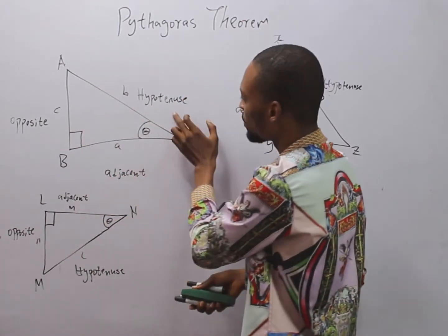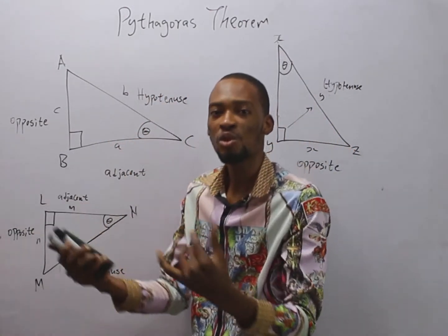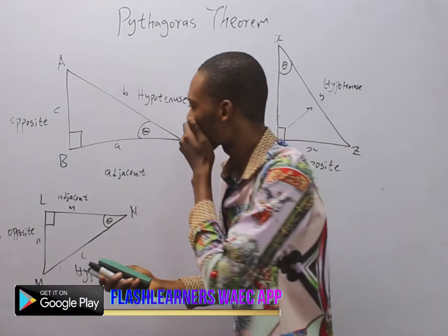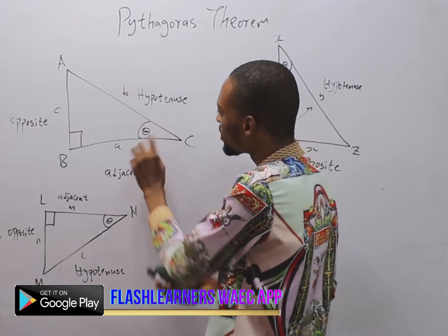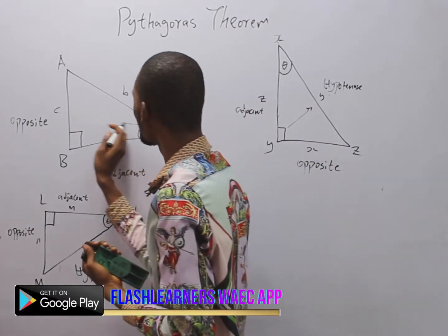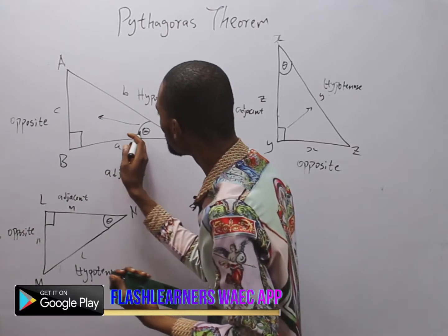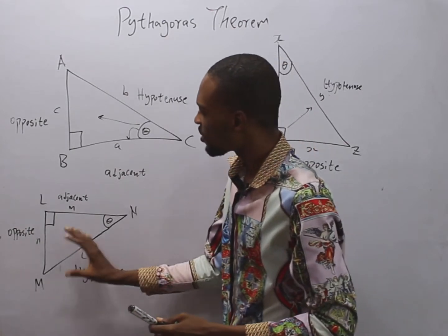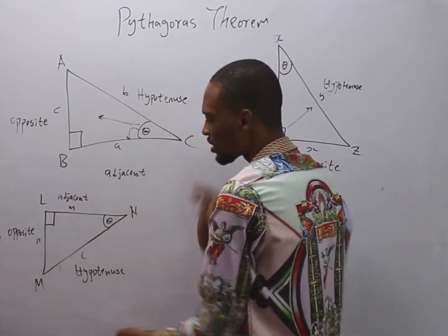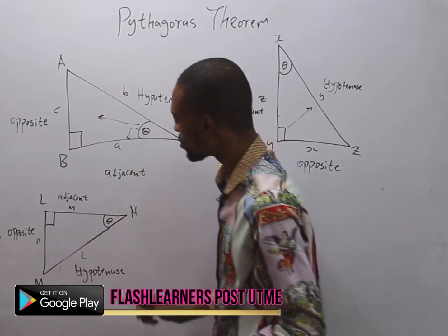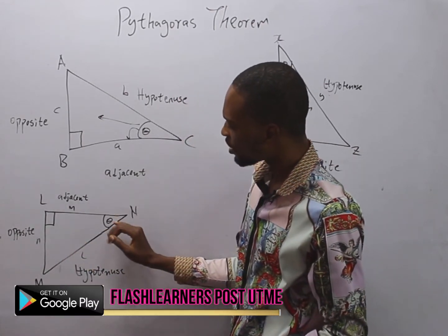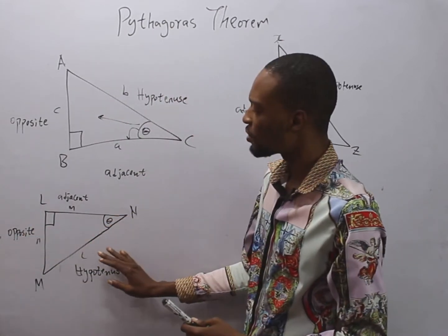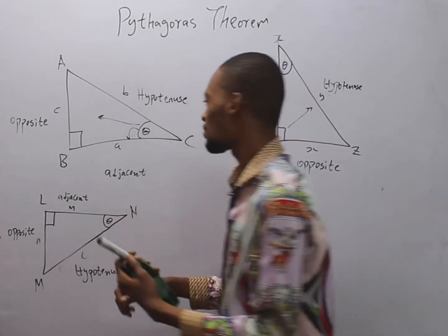In this right-angled triangle, the longest part is the hypotenuse, which I've already explained in my trigonometry video — I'll share a link to that. The side the acute angle is facing is called the opposite, while the side below is called the adjacent. This is not always in this position — even if you flip the triangle, the acute angle faces the opposite, the longest part is always the hypotenuse, and the other part is the adjacent.